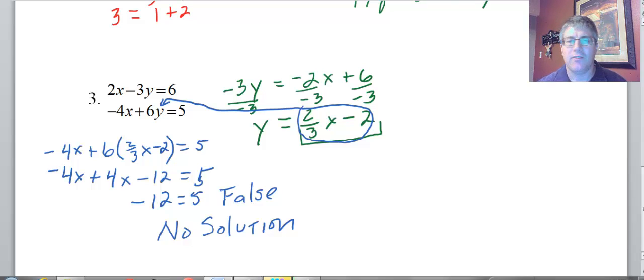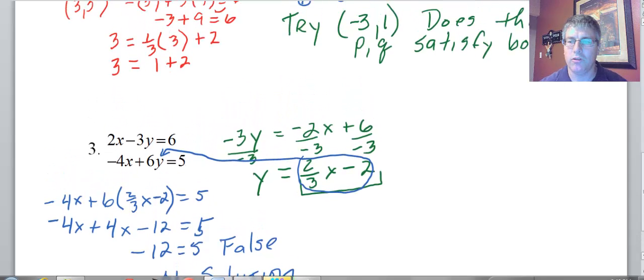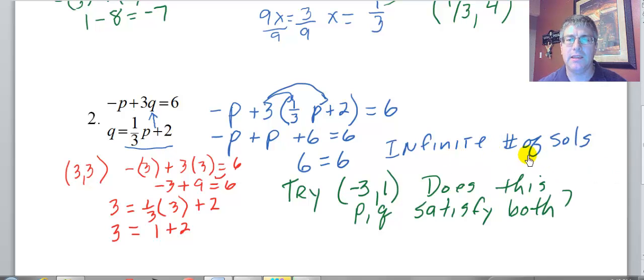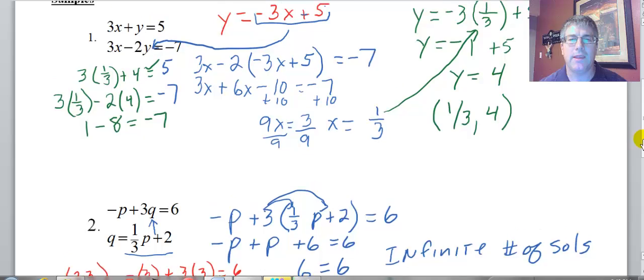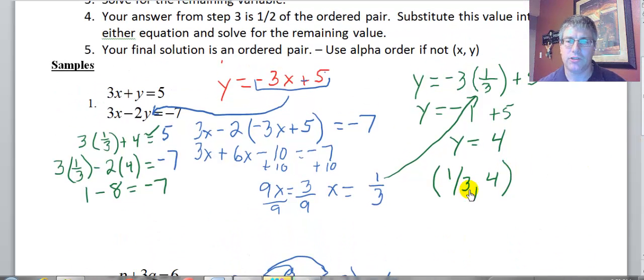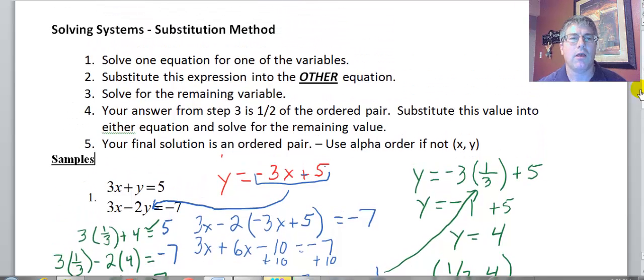So in solving systems of linear equations, we're going to get three kinds of answers: we can get no solution, we can get an infinite number of solutions, and we can get one solution. So that wraps up our introduction to solving systems using the substitution method. And we'll see you in class.